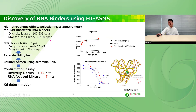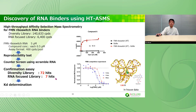This slide shows the discovery of an RNA binder using HT-ASMS for FMN riboswitch RNA. We performed high-throughput screening using a diversity library and an RNA-focused library. Reproducibility tests and counterscreens were performed to confirm the hit compounds. We were able to find compounds that show competitive binding to FMN, and we could clarify the crystal structure of the RNA-compound complex.